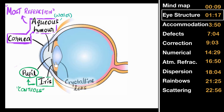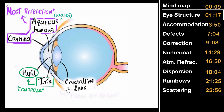Then comes the crystalline lens. It's called crystalline because the lens is made of proteins called crystalline. The remaining refraction is done by the lens — basically its job is to focus the rays of light onto the retina.